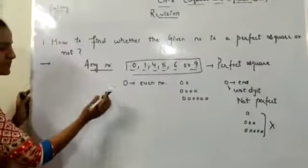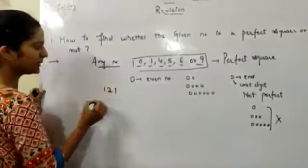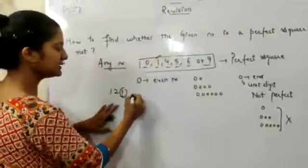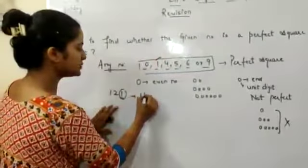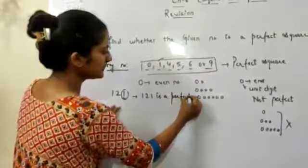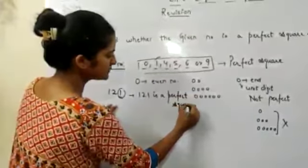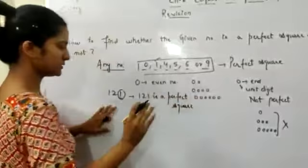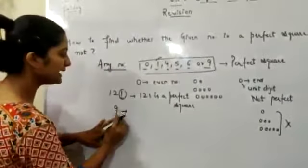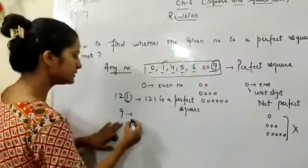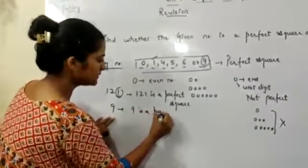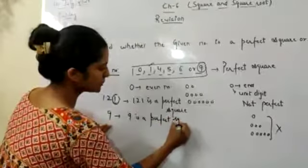Example: if we have 121, the unit digit is 1. Since 1 is a valid unit digit, 121 is a perfect square. Next example — if we have 9, the unit digit is 9, so 9 is a perfect square.